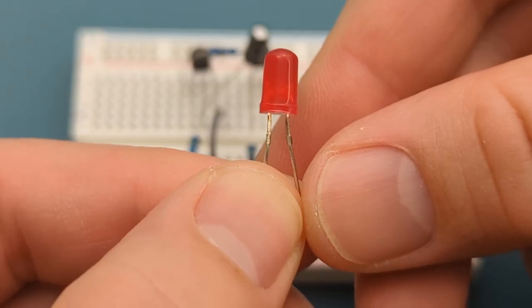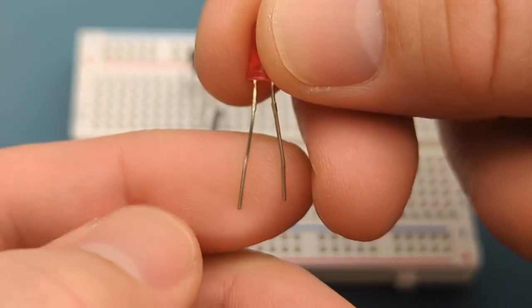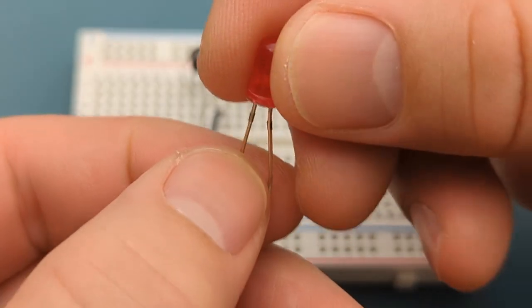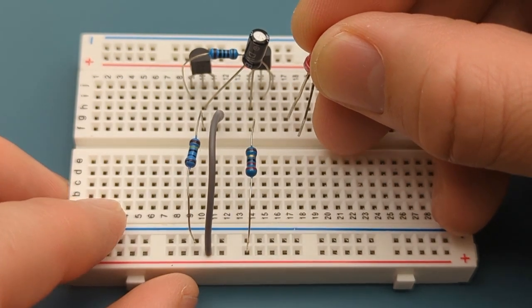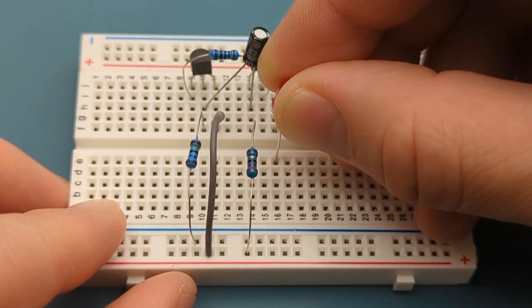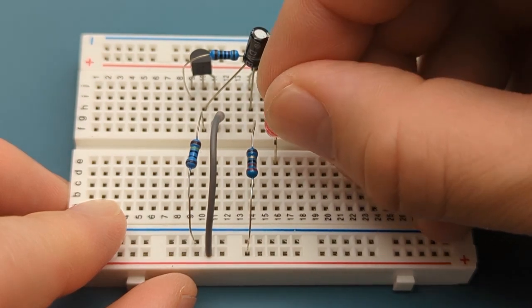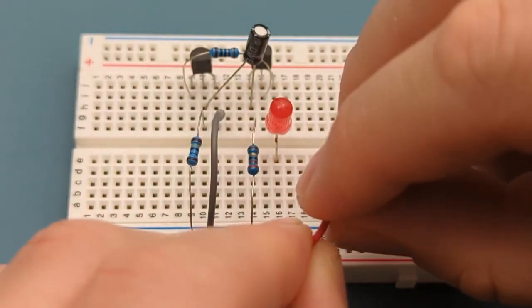Insert an LED into the emitter of the BC547 and the negative rail. The positive lead is connected to the emitter. Use a jumper wire to connect the LED to the negative rail.